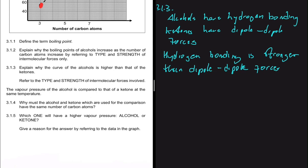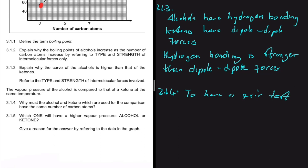Question 3.1.4 asks why the alcohol and ketone used for comparison must have the same number of carbon atoms — essentially to ensure a fair test. We are comparing boiling points as a function of the functional group. If we have two different functional groups and a different number of carbon atoms, we cannot tell whether the difference in boiling point is due to carbon atoms or the functional group. So we keep the number of carbon atoms the same and only change the functional group.